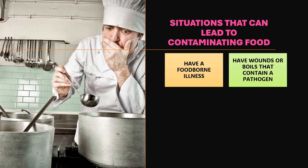Next is having wounds or boils that contain pathogens. For example, while cutting vegetables, a laceration or wound occurs and bleeds — the blood can transfer from the knife or from the hands of the person preparing the food to the food itself. Boils can also contain pathogens.